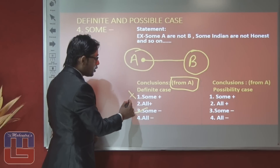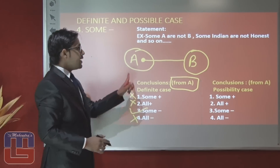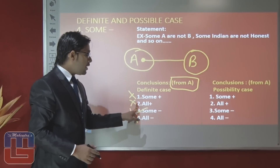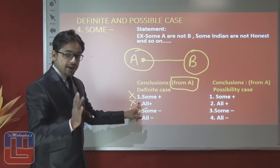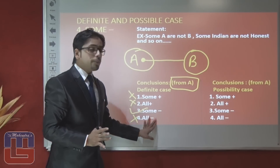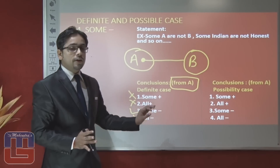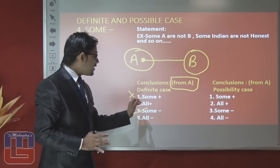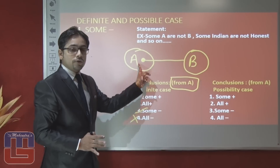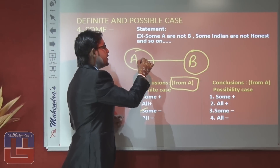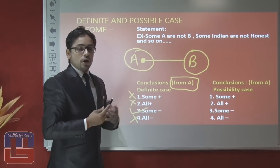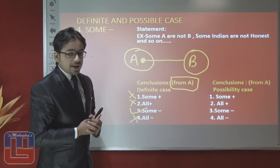All other options from A's perspective are false. The statement is negative, so the conclusion cannot be positive in definite manner. For 'all A are not B' in definite case — we cannot conclude about all parts of A, only that some A are not B. Now let's talk about the possible cases of A.